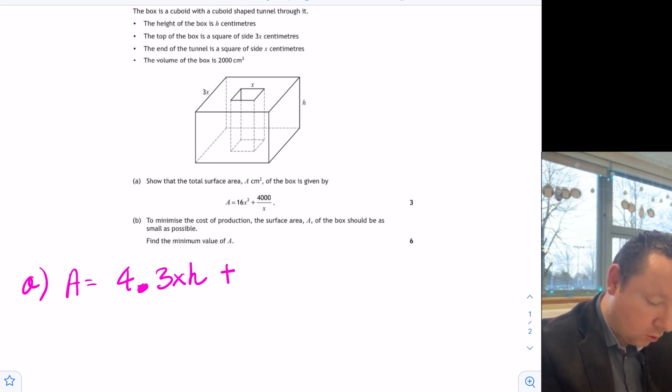Well, I've now got my top and my bottom. So my top is going to be 3x times 3x. So that's 9x squared. Times that by 2. So plus 9x squared. Plus another 9x squared. Just to be clear.